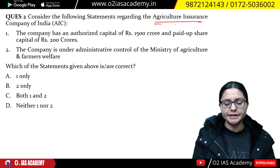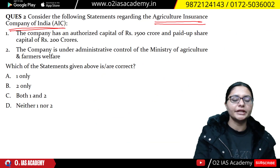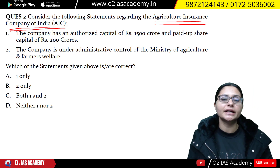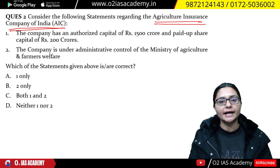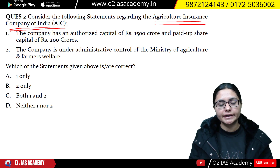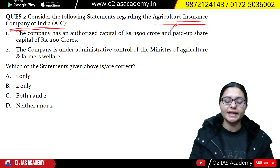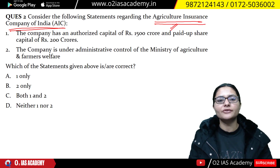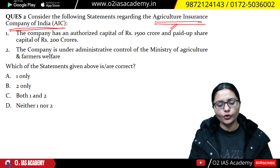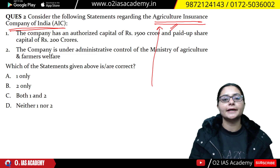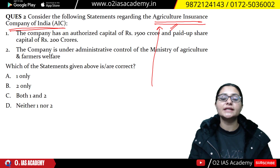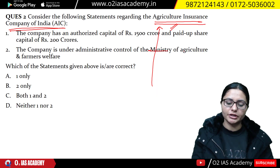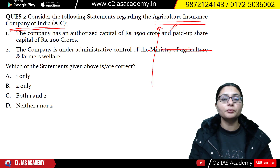The next question is related to the Agriculture Insurance Company of India. In 2002, this company was incorporated under the Indian Companies Act. It is a Central Public Sector Undertaking. Farmers can use this company for crop insurance, including weather-based and farmer-based insurance. Regarding the ministry that regulates this company, it is the Ministry of Finance, not the Ministry of Agriculture. So the second statement is incorrect.